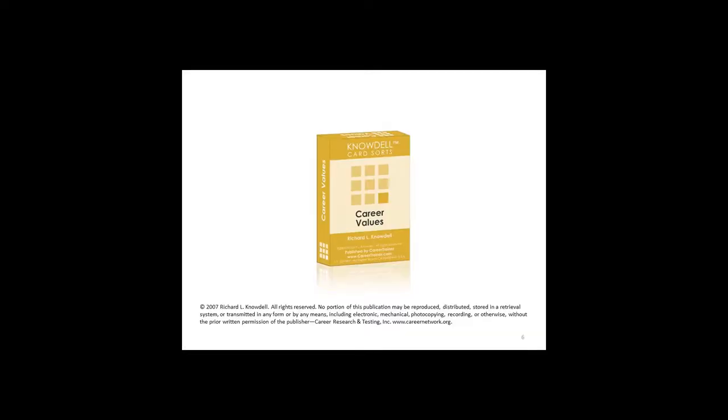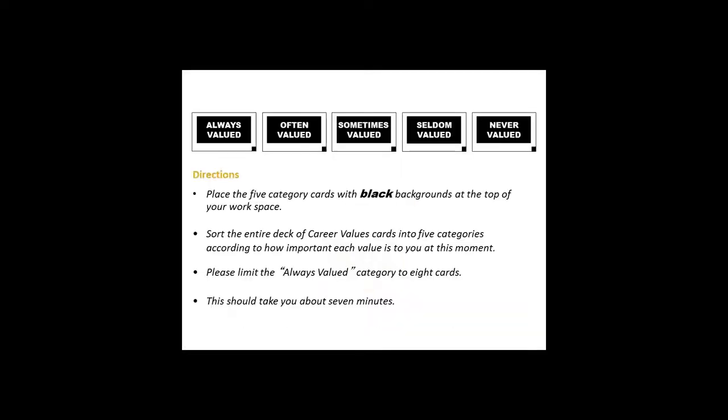So let me start with the Career Values Card Sort. That's generally the first instrument I use with my clients because it's very non-threatening. I give my client a five-point scale from always valued to never valued, and I ask them to place that scale on the table in front of them. Then I ask them to sort the entire deck of career life value cards into the five categories according to how important each value is at that moment, and I ask them to limit the Always Valued category to eight cards. It generally takes the client about seven minutes to do that.